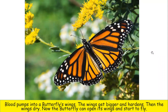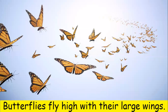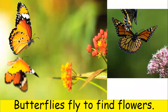Blood pumps into the butterfly's wings. The wings get bigger and they harden. Then the wings dry. Now the butterfly can open its wings and start to fly. Butterflies fly high with their large wings.